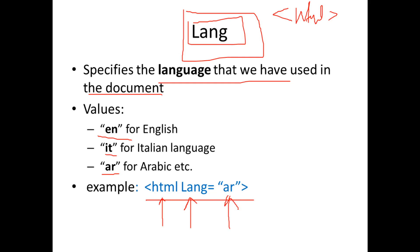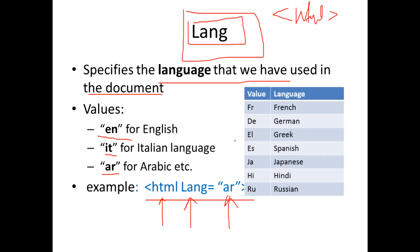If you want to use French language, we can use the code 'fr'. 'de' is for German, 'el' is for Greek, 'es' is for Spanish, 'ja' is for Japanese, and 'hi' is for Hindi. 'ru' is for Russian language. These language codes are used as values for the lang attribute in the HTML tag.